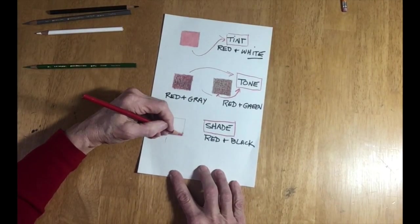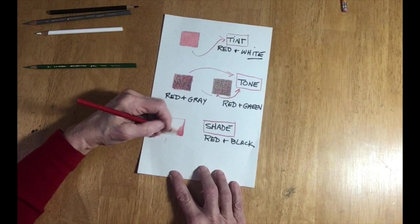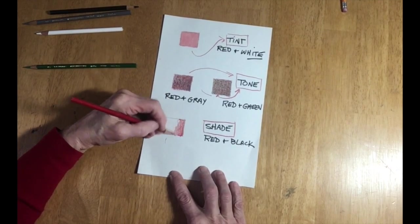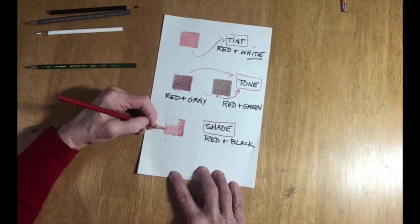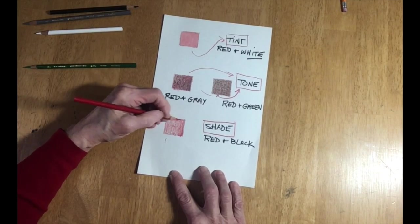This last one is going to be red with black added to it and that's called a shade. When you make a color darker you are making a shade.